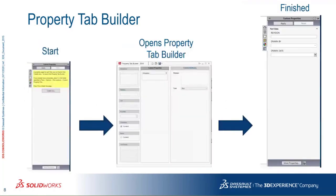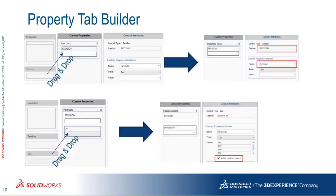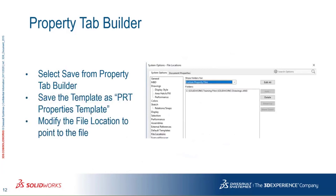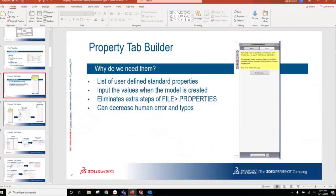I'll show you how to start the property tab builder, how it opens, what the finished product will look like. This is super simple right here but it can always get way more complicated. I'll show you the interface, the building blocks, and how to build the options. All of this is going to be in that downloadable website that Chris kicked out for us. I'm going to exit out of this so we can get into the property tab builder.